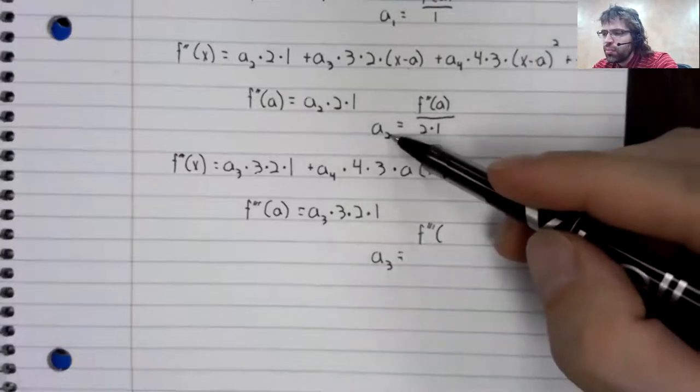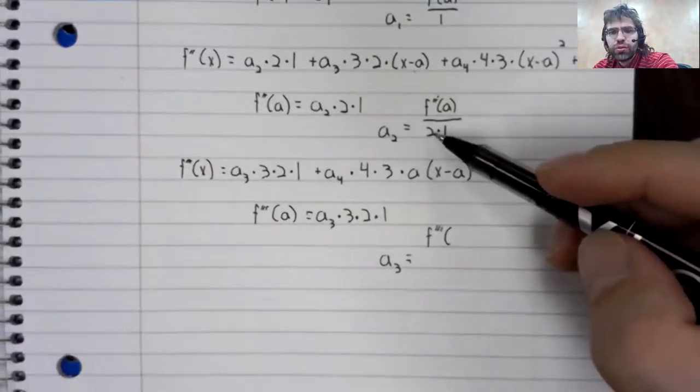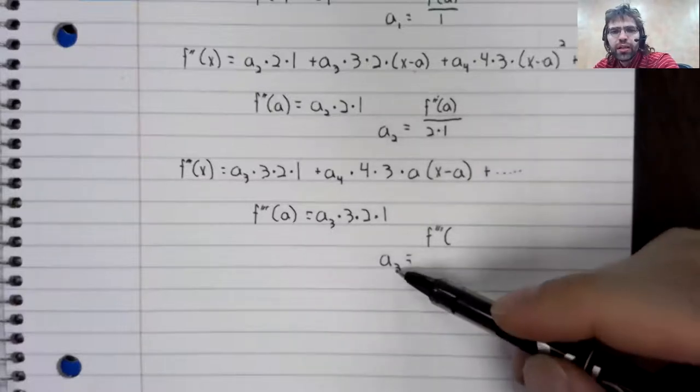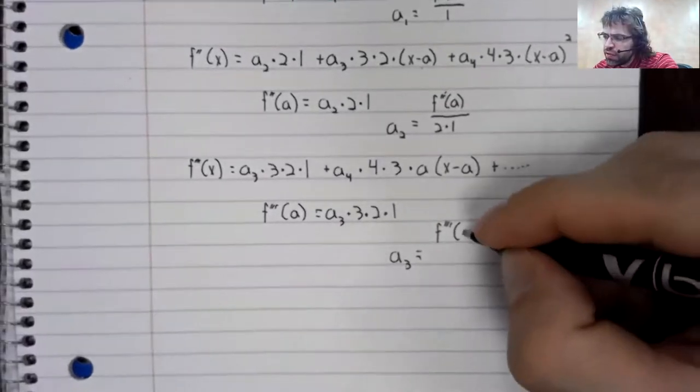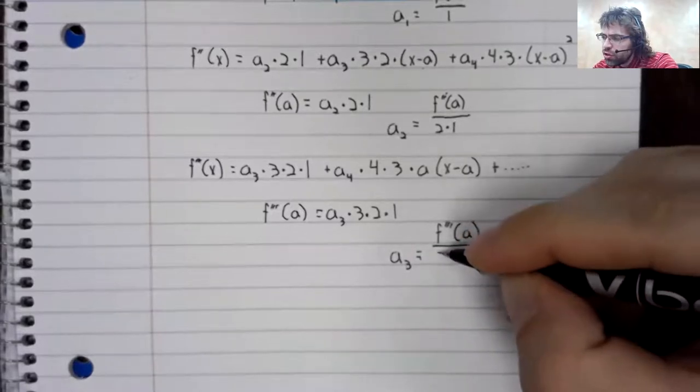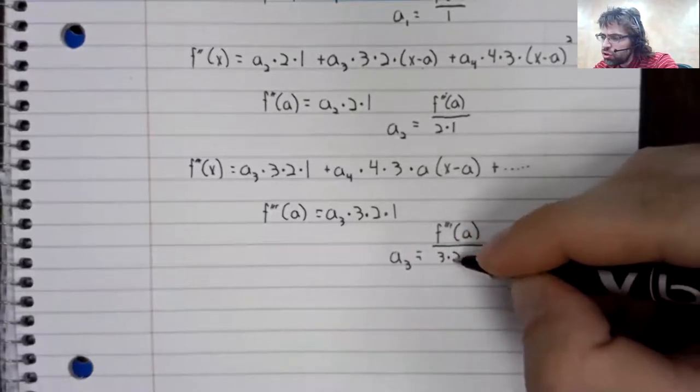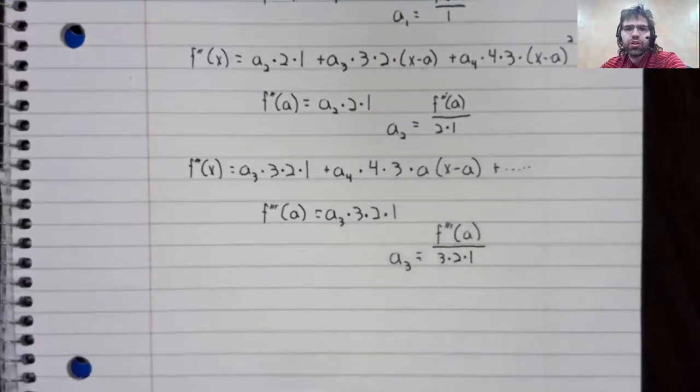A sub two, the second derivative, and two times one is two factorial. A sub three, the third derivative. And three times two times one is three factorial.